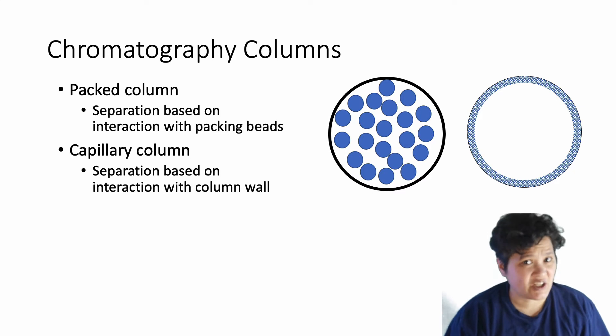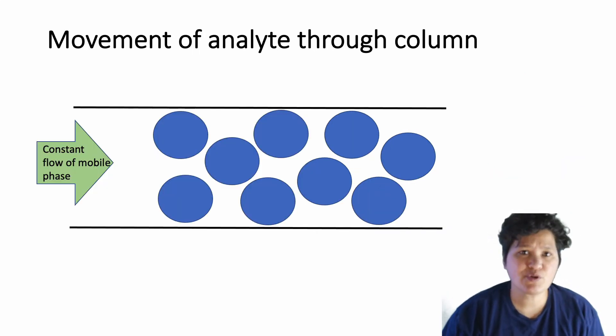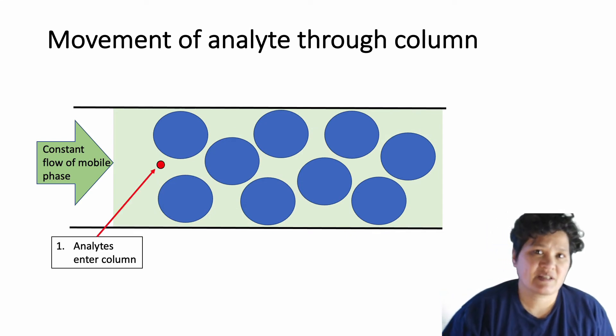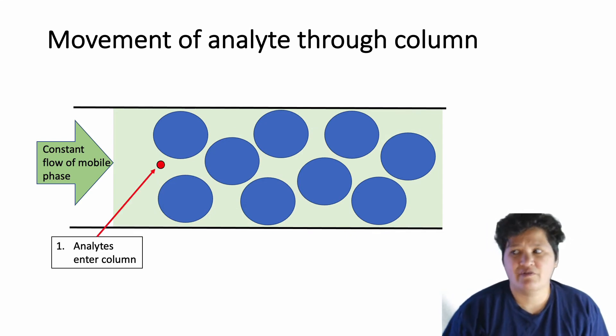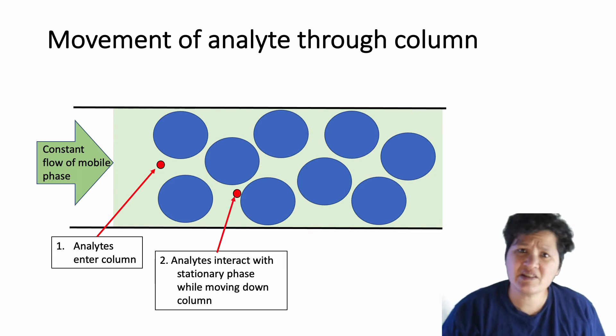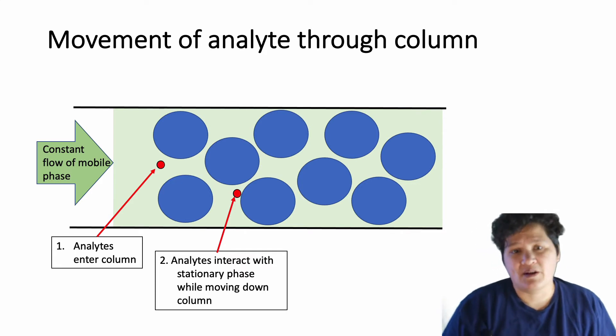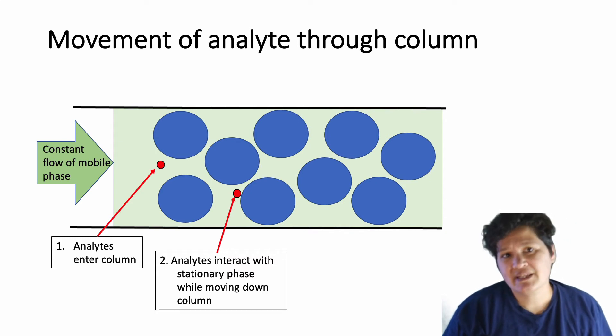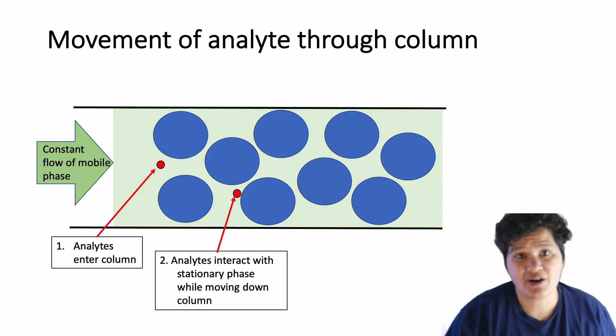Let's now talk about how an analyte moves through a chromatographic column. A sample is injected into the mobile phase, which carries it into the column. The mobile phase is constantly moving. The column is always full of it. Sometimes the movement of the mobile phase causes the analyte to advance through the column. And then sometimes the analyte interacts with a stationary phase and basically gets stuck. And now what's sticking that analyte there? It's some sort of intermolecular force. So when it's in the stationary phase, an analyte is not moving down the column.